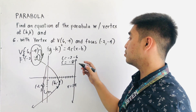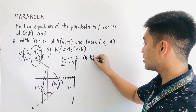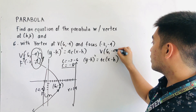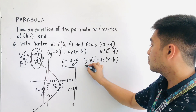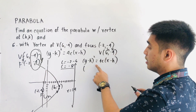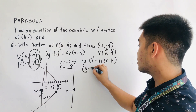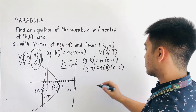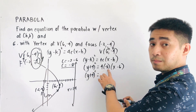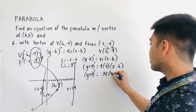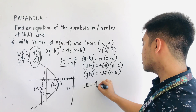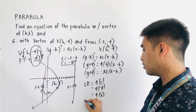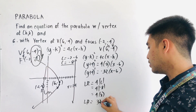We are now ready to substitute into the equation. We have: y minus k, quantity squared, equals 4c times x minus h, where the vertex is at (6, -4), so H = 6 and K = -4. Negative negative becomes y plus 4, quantity squared, equals 4 times negative 8 times x minus 6. That becomes negative 32 times x minus 6. The length of the latus rectum is 4 times the absolute value of C — 4 times the absolute value of negative 8 — which is 4 times 8, giving a latus rectum length of 32 units.